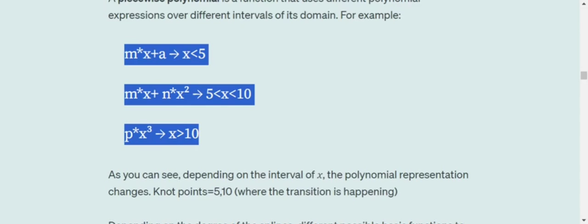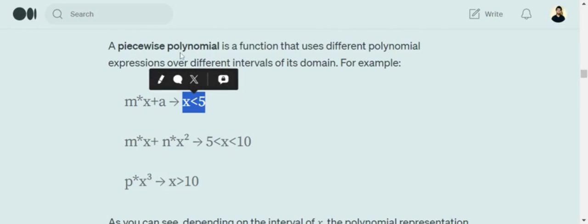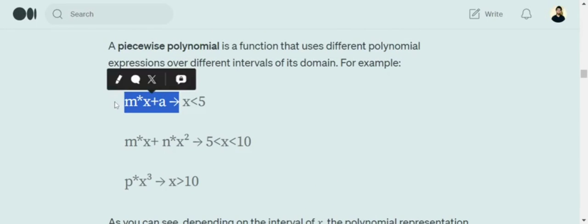And when the value of x is greater than 10, it is p into x cube. So basically, you can see that for different intervals of x, piecewise polynomial is having different expressions.